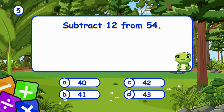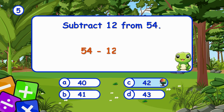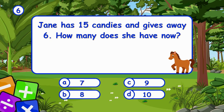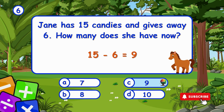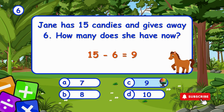Subtract 12 from 54. It's C, 42. Subtracting 12 from 54 leaves 42. Jane has 15 candies and gives away 6. How many does she have now? It's C, 9. 15 minus 6 equals 9 — Jane has 9 candies left.